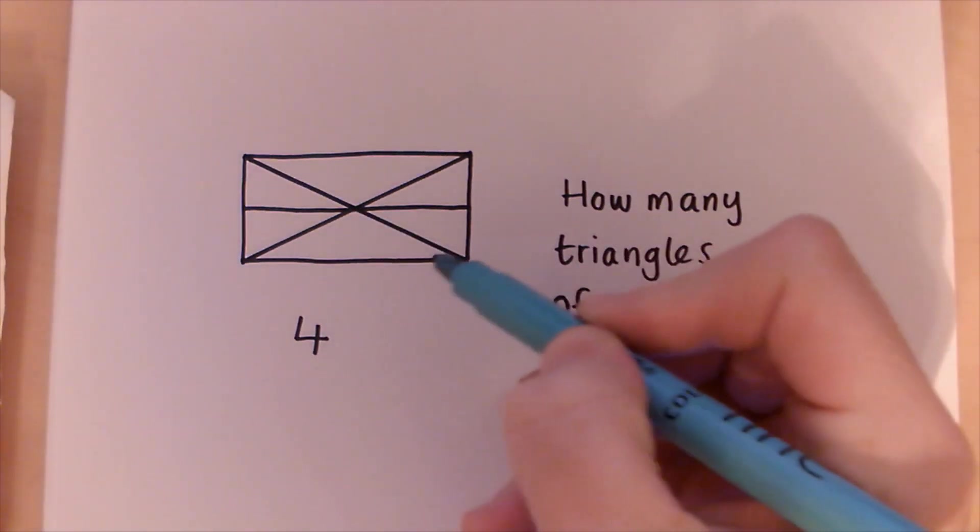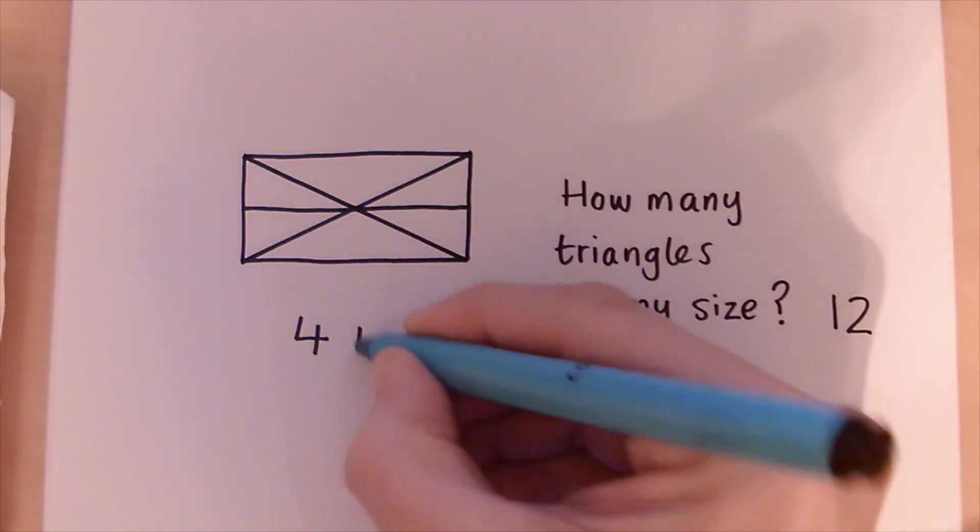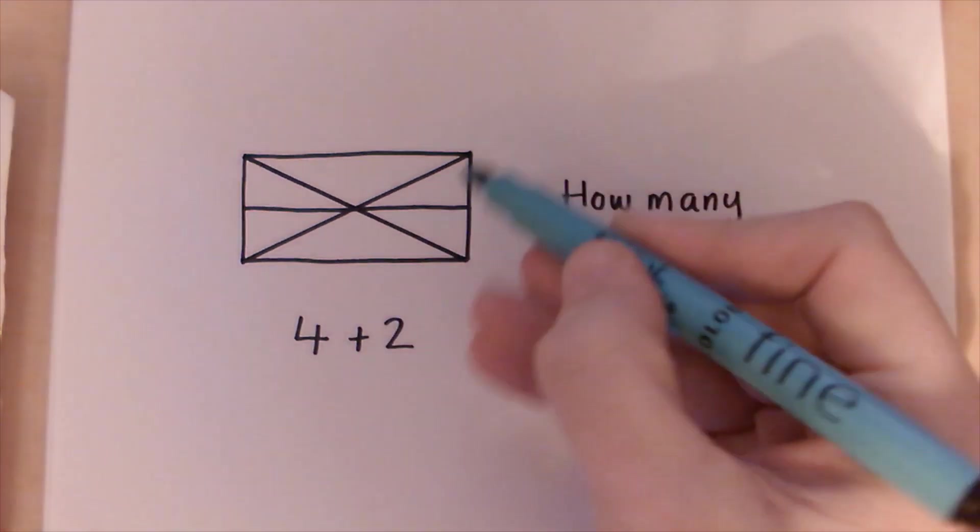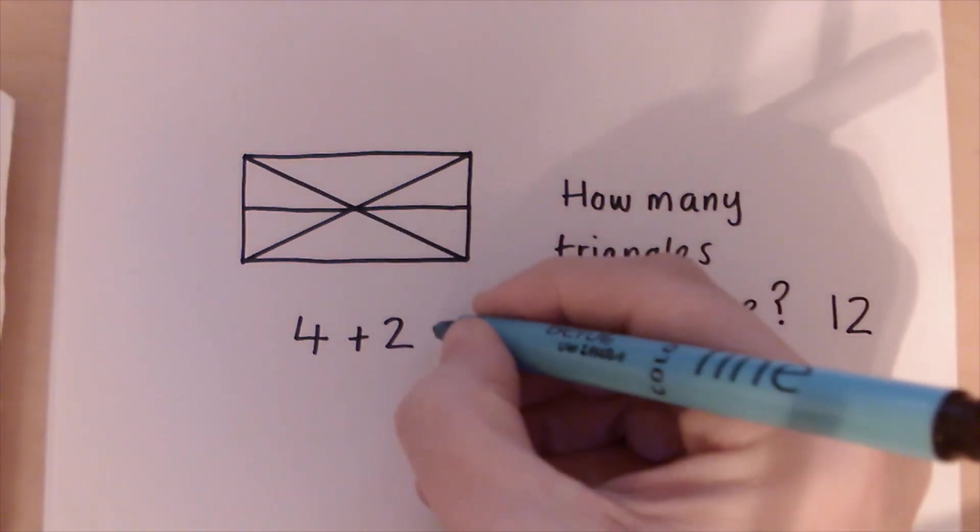You've got two which are this size, there and there, so that's another two. We've got two which are this size, one that side and one the other side, so that's another two.